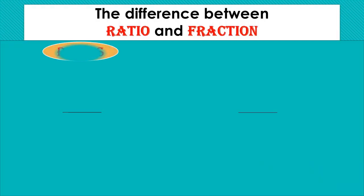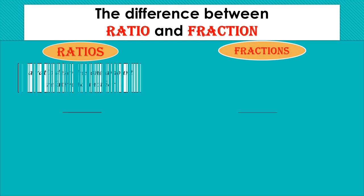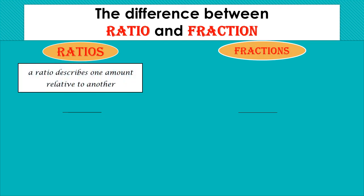Let us start with the definition of ratios. A ratio describes one amount relative to another. In the ratio we have two different things we are comparing between them.